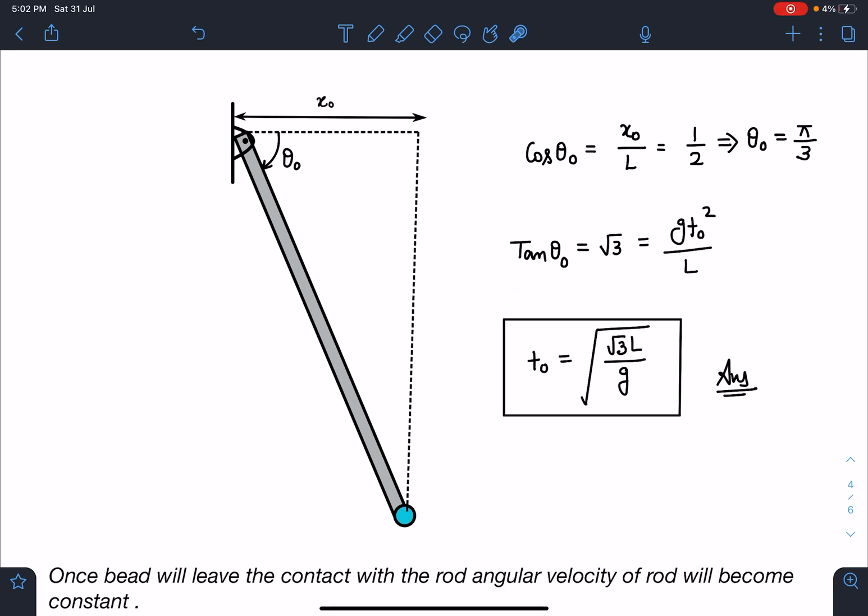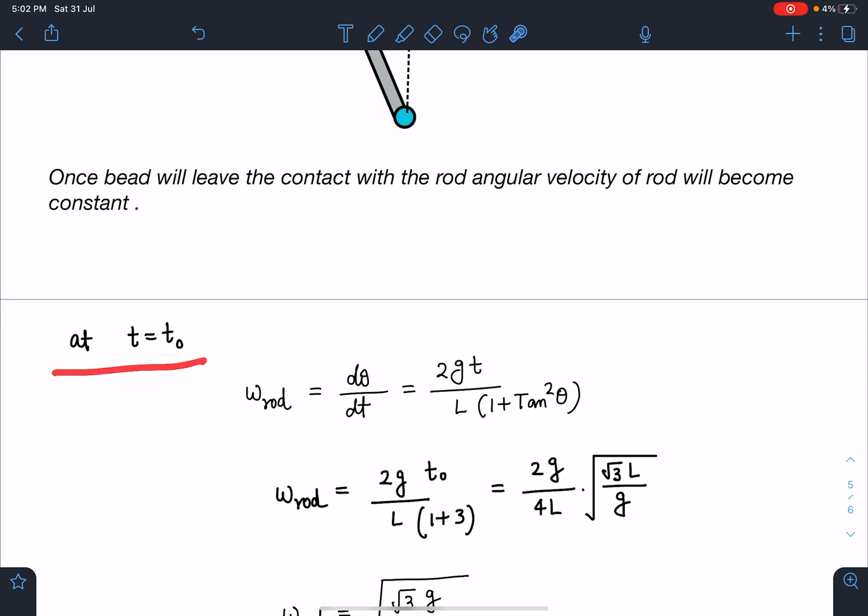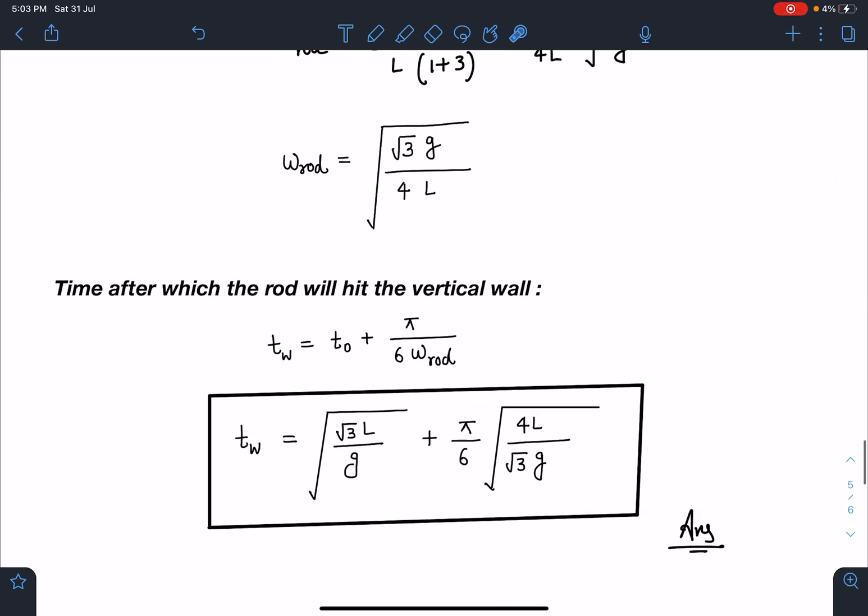Once bead will leave the contact with the rod, angular velocity of rod will become constant. Now this massless rod will cover rest of the 30 degree angle with a constant angular velocity ω. We can say at t = t₀, this ω value we have calculated earlier. If I substitute the tan θ value in this and time value, I am going to get here ω = √(√3 g/4L).